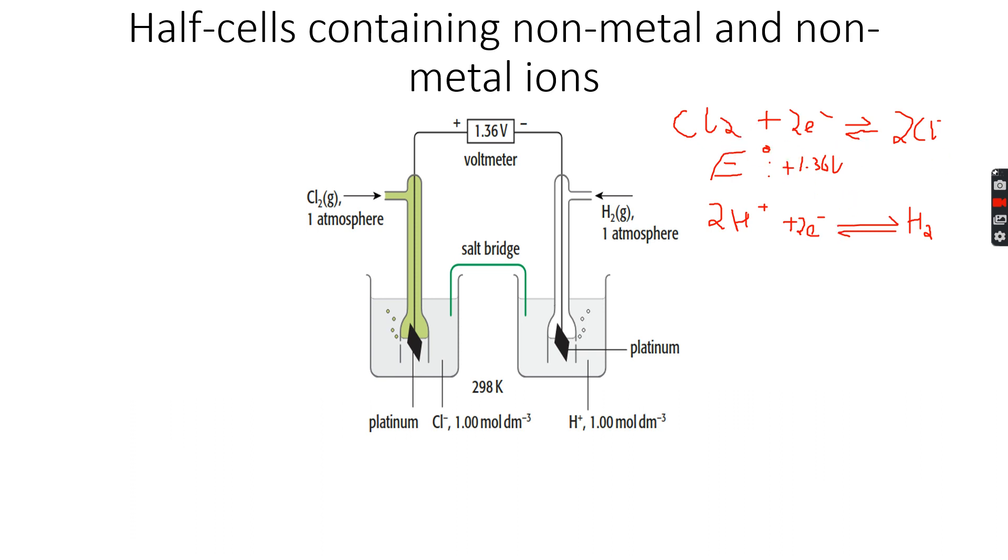So whenever E0 is negative, the reverse reaction is feasible. Whenever E0 is positive, the forward reaction is feasible. That's what these E0 values actually tell us. Now for this one we know that E0 is equal to 0 volts.